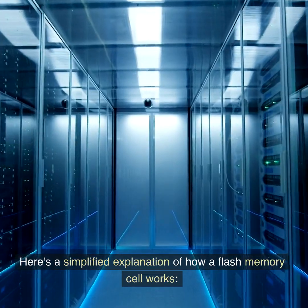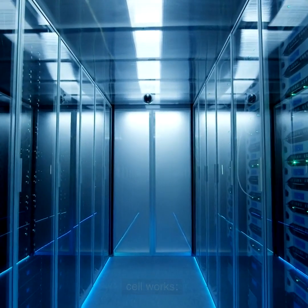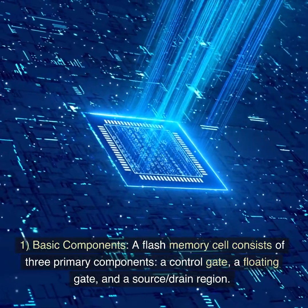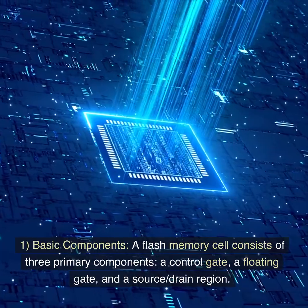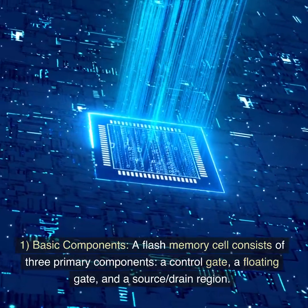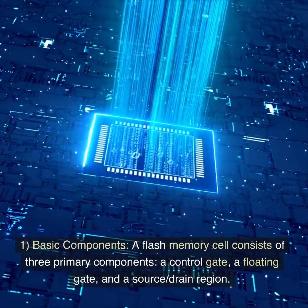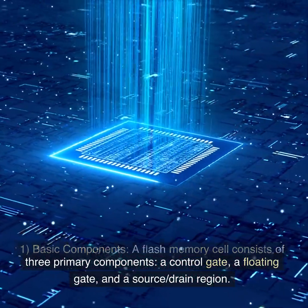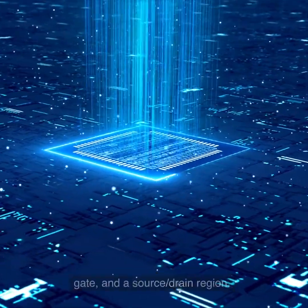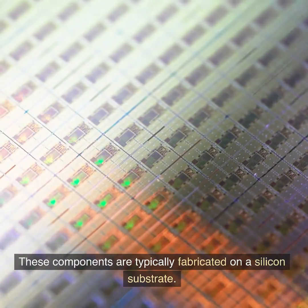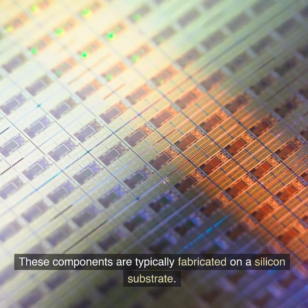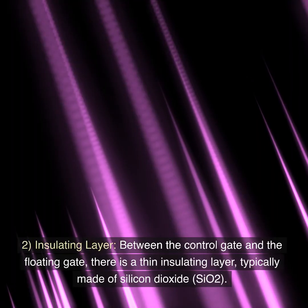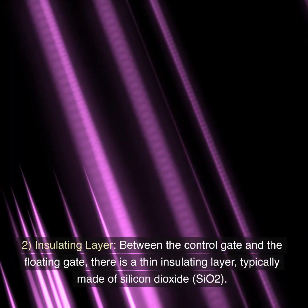Here's a simplified explanation of how a flash memory cell works. First, basic components: a flash memory cell consists of three primary components — a control gate, a floating gate, and a source-drain region. These components are typically fabricated on a silicon substrate.